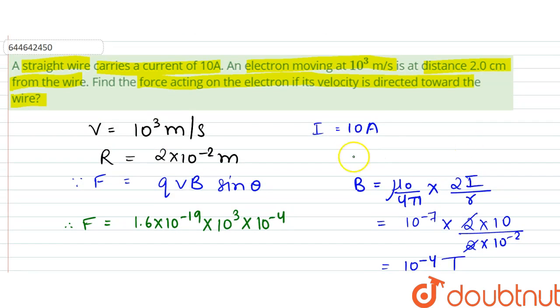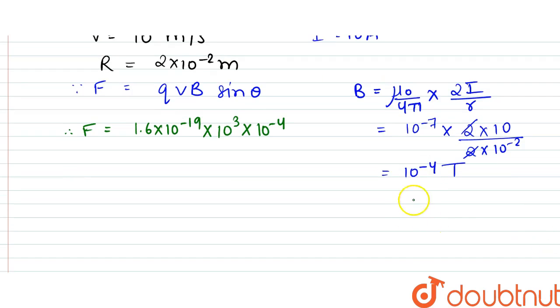Velocity is directed toward the wire. So if this is a wire, the velocity is toward this.